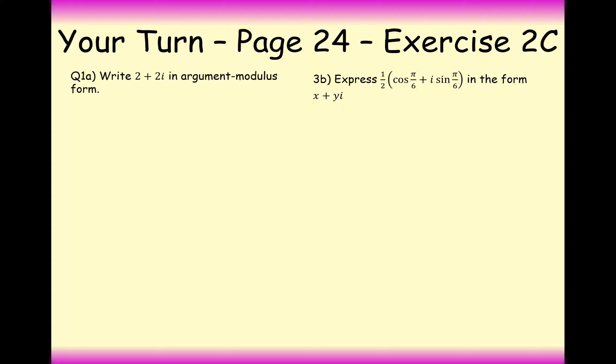Alright then, so let's have a go at the first one here then. Draw out a little diagram so you can see what's going on here. We've got 2 plus 2i in this position here. We've got 2 going across and 2 up. So the first piece of information we need to know is what r is. Now r is equal to 2 squared plus 2 squared, which is equal to 2 root 2.